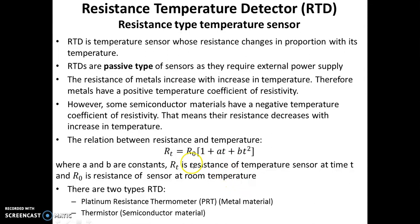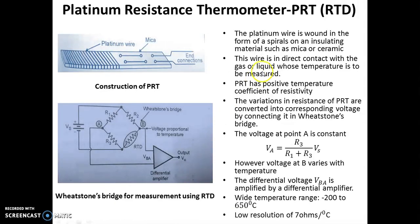Now let us see different types of RTDs. We will be seeing the platinum resistance thermometer, which is made up of metal material, and the second type of RTD is the thermistor, which is made up of semiconductor material. PRT stands for platinum resistance thermometer — it is basically an RTD.